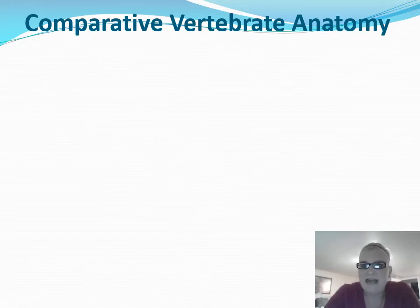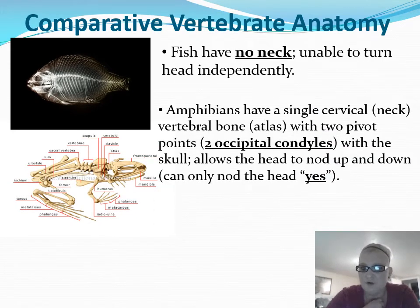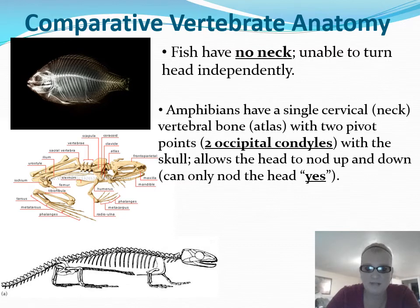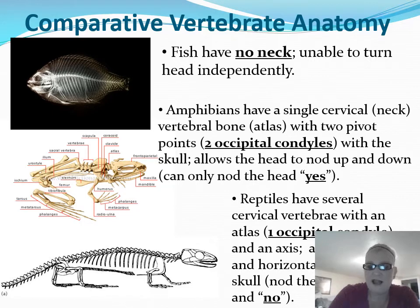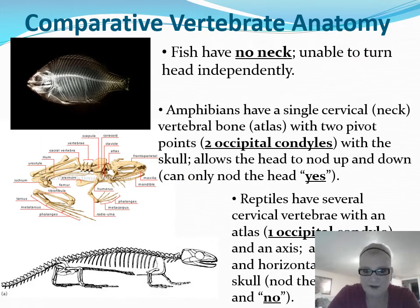Let's look at some anatomical changes. Fish had absolutely no cervical vertebrae, so they weren't able to independently move their head up, down, or side to side. Frogs had one cervical vertebra, so they could nod their head up and down. Reptiles, however, are going to have several different cervical vertebrae, so they are able to move their head up and down as well as left to right. That's one thing that creeps me out about snakes — they're able to turn their head back and look at you. Reptiles have more free movement of their head compared to amphibians and fish.